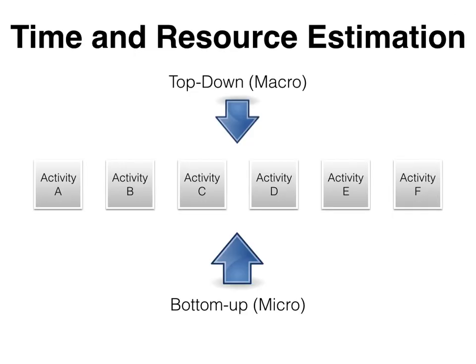That's a quick summary of the top-down estimation techniques used in project management: analogous estimation, parametric estimation, learning curves, and function point analysis. These macro techniques are usually used during project initiation. When doing more detailed project planning, a bottom-up or micro estimation technique will often be employed to get a more accurate estimate of the time and resources required for the project.